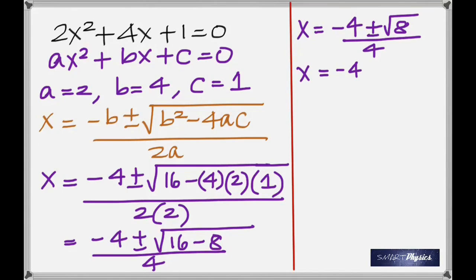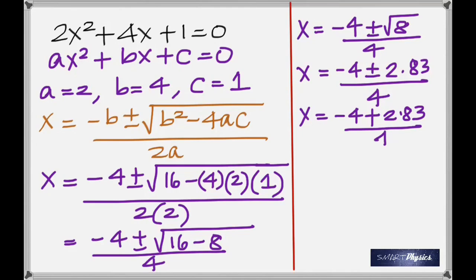And when you take the square root of 8 you get approximately 2.83. So now one of the solutions can be minus 4 plus 2.83 divided by 4, or the other solution may be minus 4 minus 2.83 divided by 4.